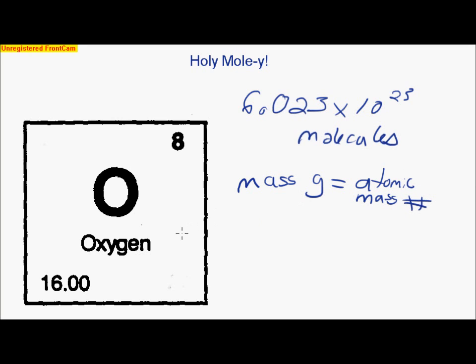When you are using the periodic table, this atomic mass number is right here. So, 6.023 times 10 to the 23rd molecules in oxygen weighs 16 grams.